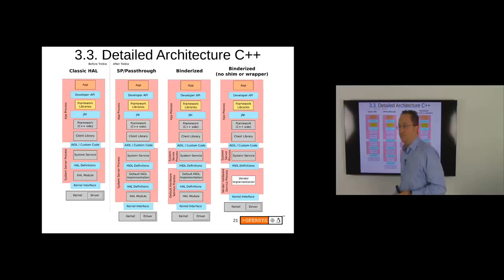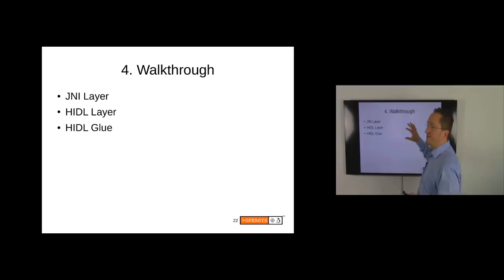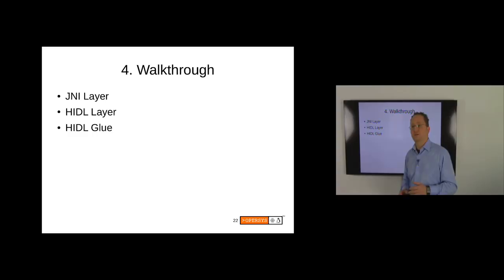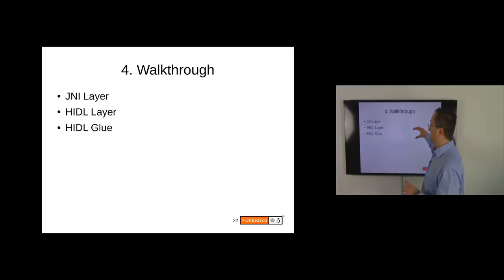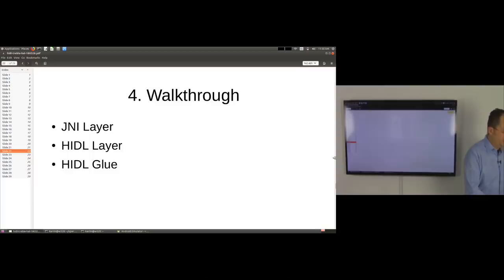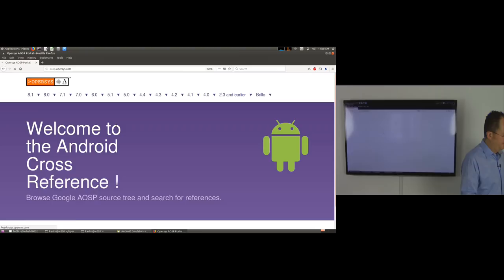Now I'd like to do a comparative walkthrough: what does it look like before HIDL and after HIDL? For this example I'm going to check the Light system service and show you what it looked like in 7.x and then in 8.x. I'm going to pull up a cross-reference on screen. Let me go ahead and grab the 7.x and 8.x source trees as separate windows so it'll be easier to browse around.